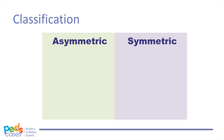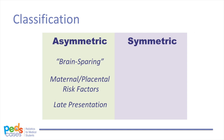IUGR babies can be classified into two categories: those with symmetric IUGR and those with asymmetric IUGR. The main difference between these two categories is the congruence between the baby's head size and body size. Asymmetric IUGR is also sometimes called head or brain-sparing IUGR because these babies tend to have normal-sized heads and comparatively small bodies. It is caused by maternal or placental factors and tends to present later during the mother's pregnancy, often in the second or third trimester.